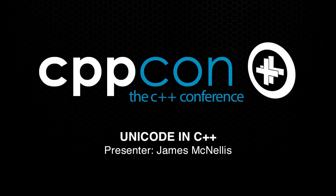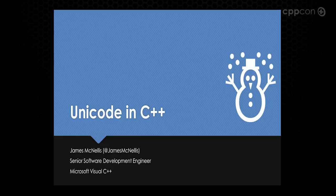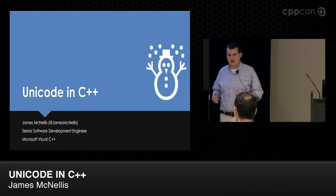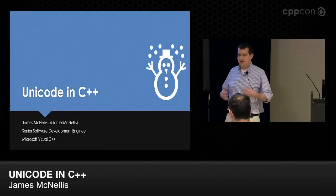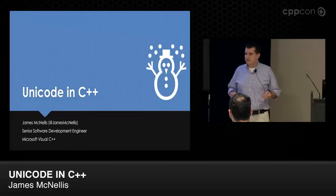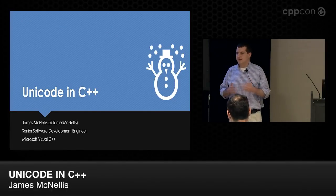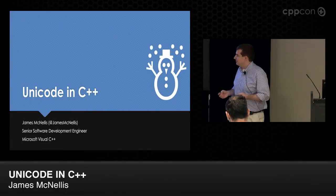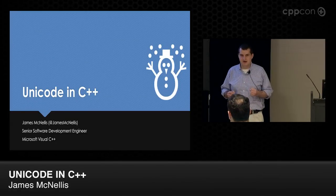Hello everybody. Thanks for being patient with us while we figured out the room situation. My name is James McNellis. I'm a software developer on the Visual C++ team at Microsoft. I'm going to talk about Unicode today, specifically Unicode in C++. The first part will be an introduction to text encoding in Unicode — covering terminology and how text encoding works and why Unicode is important. Then in the second half, we'll look at the problems with Unicode and why it is difficult to work with Unicode text, and how we can do that effectively in C++.